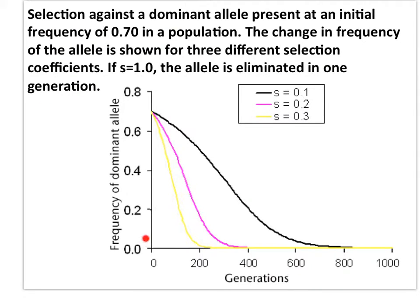Here is a graph that shows the frequency of a dominant allele over time at three levels of selection pressure. The yellow curve represents the most intense selection pressure, while the black curve represents the least intense pressure. If selection occurs at any level of selection pressure, the outcome is the same: allele frequency changes, and this is evolution. When the selection pressure is particularly strong, as with the yellow curve, evolution occurs rapidly as the frequency changes over a shorter period of time.